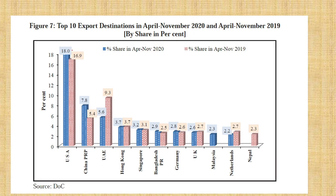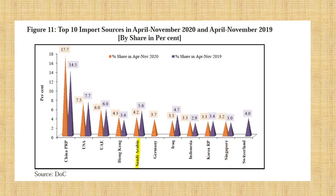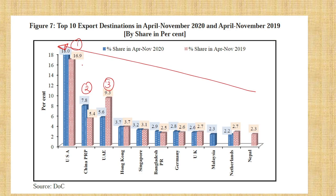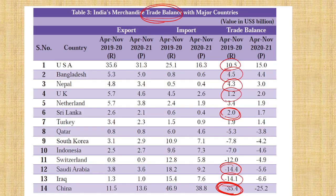For export destinations, the list of countries to which India exports the maximum: first is USA, second is China, third is UAE. And from which India imports maximum: first is China, second is USA. So India exports maximum goods to USA, second to China, third to UAE. But imports maximum from China and USA. That is why India has a positive trade balance with USA but a negative trade balance with China.